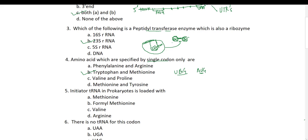Fifth question: the initiator tRNA in prokaryotes is loaded with what? Generally, the initiator tRNA in eukaryotes is loaded with methionine. But in prokaryotes and in cell organelles of eukaryotes like mitochondria and chloroplasts, the initiator tRNA is loaded with formyl methionine. This formyl group is later removed, but it is initially present during translation.